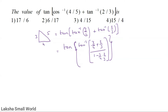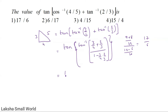Solving the numerator: 3×3 = 9, plus 4×2 = 8, so numerator is 9 + 8 = 17. Denominator: 3×3 = 9, 9+6 = 15 over 12, then 12 cancels. Numerator value is 17, giving tan⁻¹(17/6).